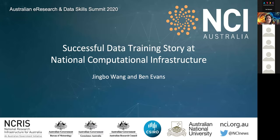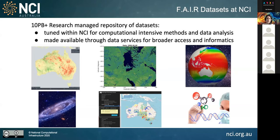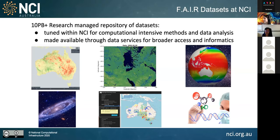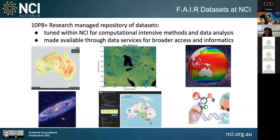NCI has been managing more than 10 petabytes of research data, and those data are tuned for computational-intensive methods and data analysis. Some of the data are also served through our data services. Our data collection includes satellite images, climate models, weather simulation observation, astronomy, geophysics, genomics data, and bioinformatics as well. We also developed an in-house high-performance data service called GSCI. This allows users to extract information very quickly online, and currently we are serving most of the Earth observation data, but we hope to release some climate model data as well.